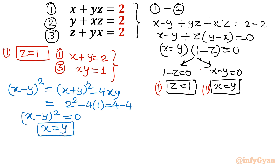The second case gives x equal to y, and we are getting the same result from the first case with z equal to 1. Substituting in equation 3, xy equal to 1. Putting y equal to x: x squared equal to 1.